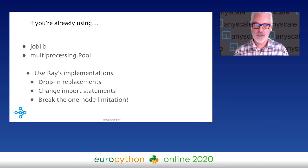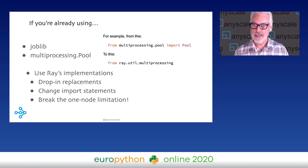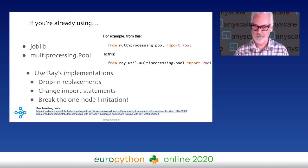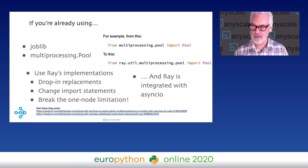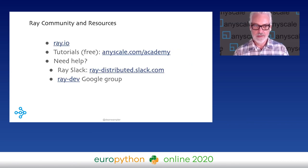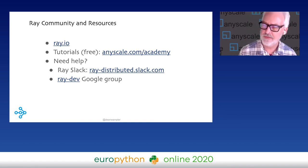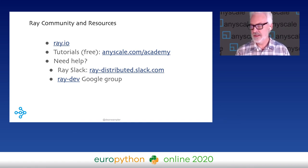If you're interested in adopting Ray and you're already doing multiprocessing with joblib or multiprocessing pool, Ray provides drop-in replacements that break single-node boundaries. With just changing import statements, you can now schedule across a cluster rather than just across cores in a single machine. It also integrates nicely with async IO. Check out ray.io for more information. I've been writing tutorials you can find at Anyscale Academy. You're welcome to join the Ray Slack — that's the best place to ask questions. There's also a Google group.